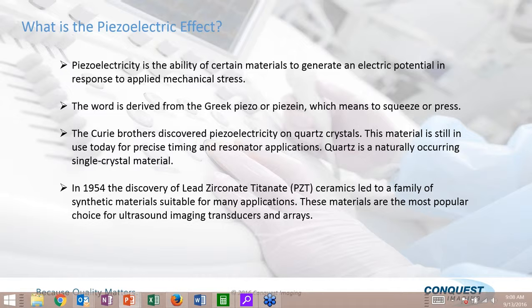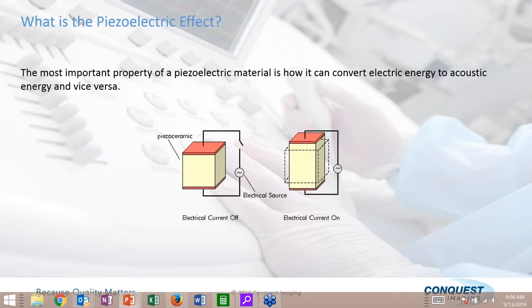The vast majority of ultrasound transducers utilize a ceramic type material; some use silicon, and there are man-made materials being developed by manufacturers, including single crystal transducer arrays. Essentially what we do is apply an electrical current to these transducers, which compresses the crystal. Once we remove that electrical current, the crystal expands, which creates a mechanical wave.